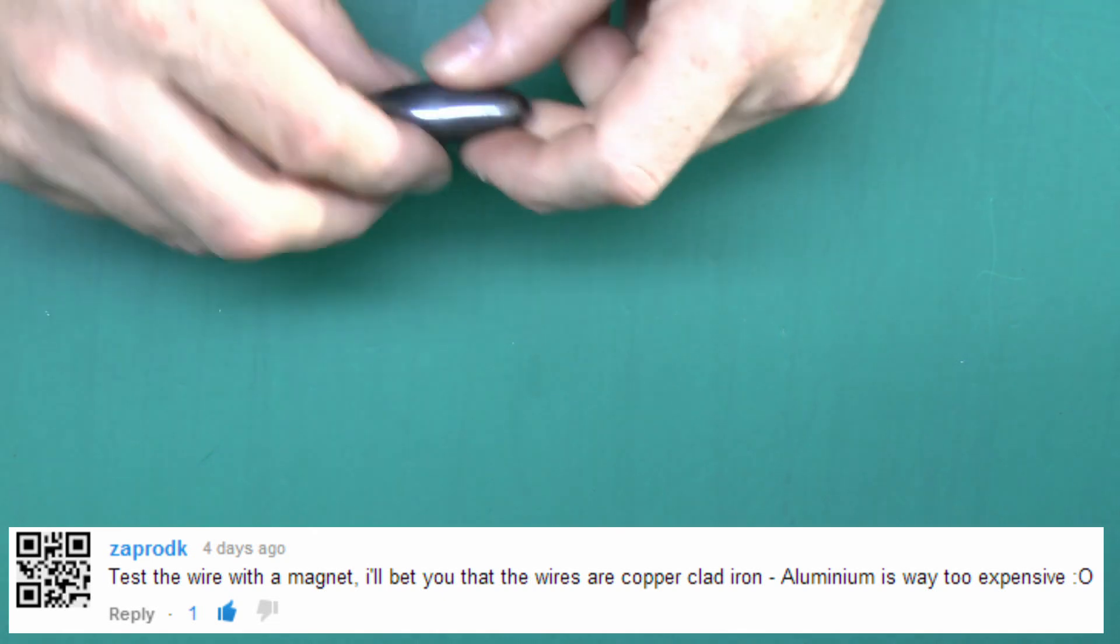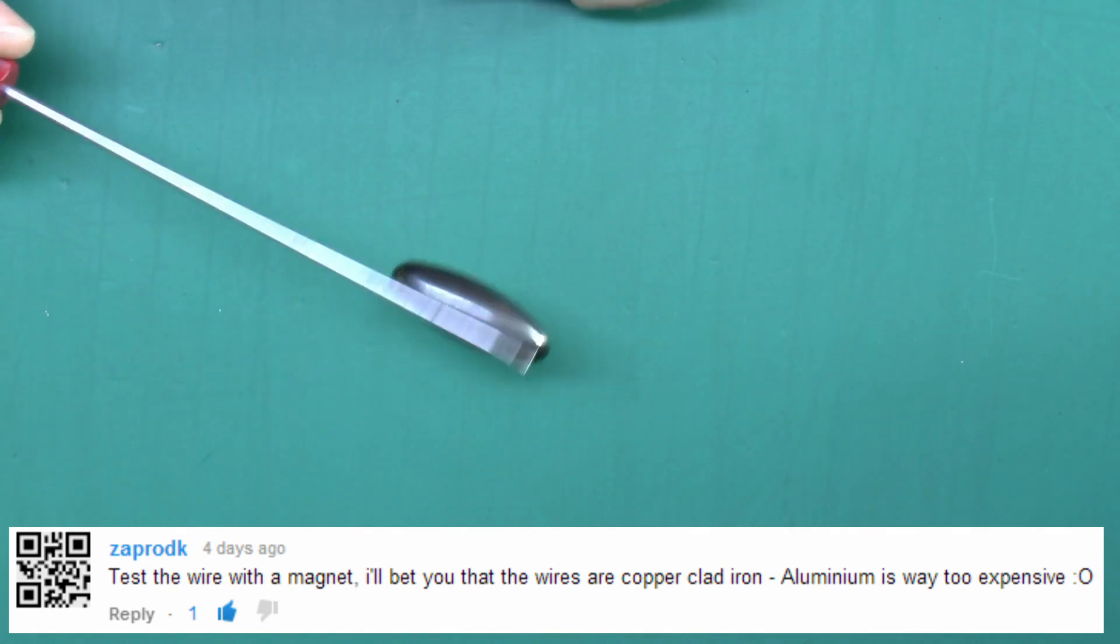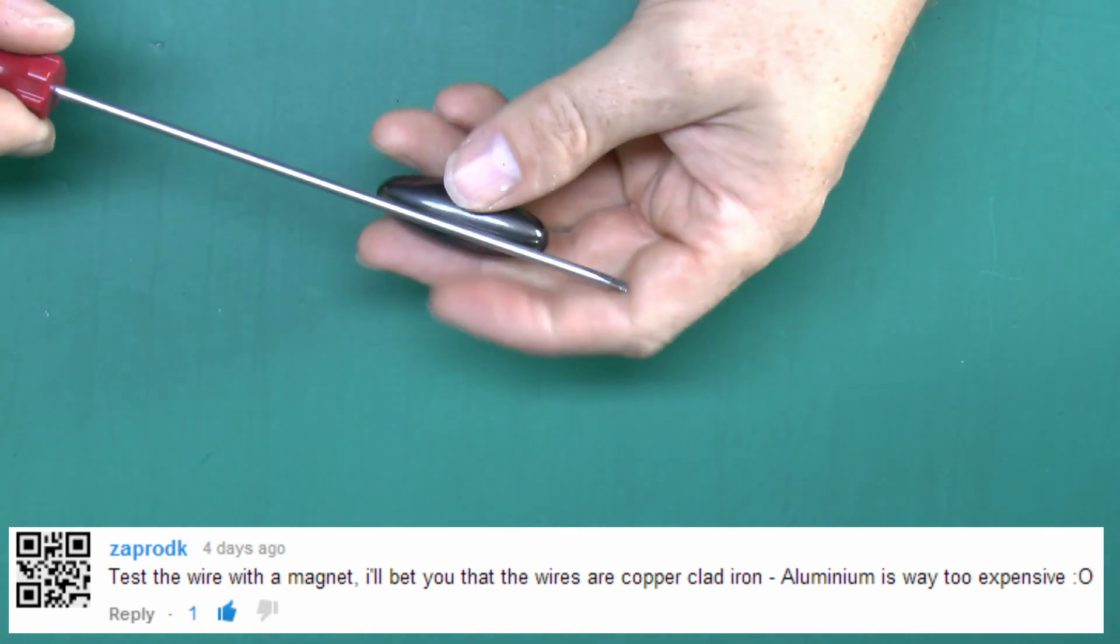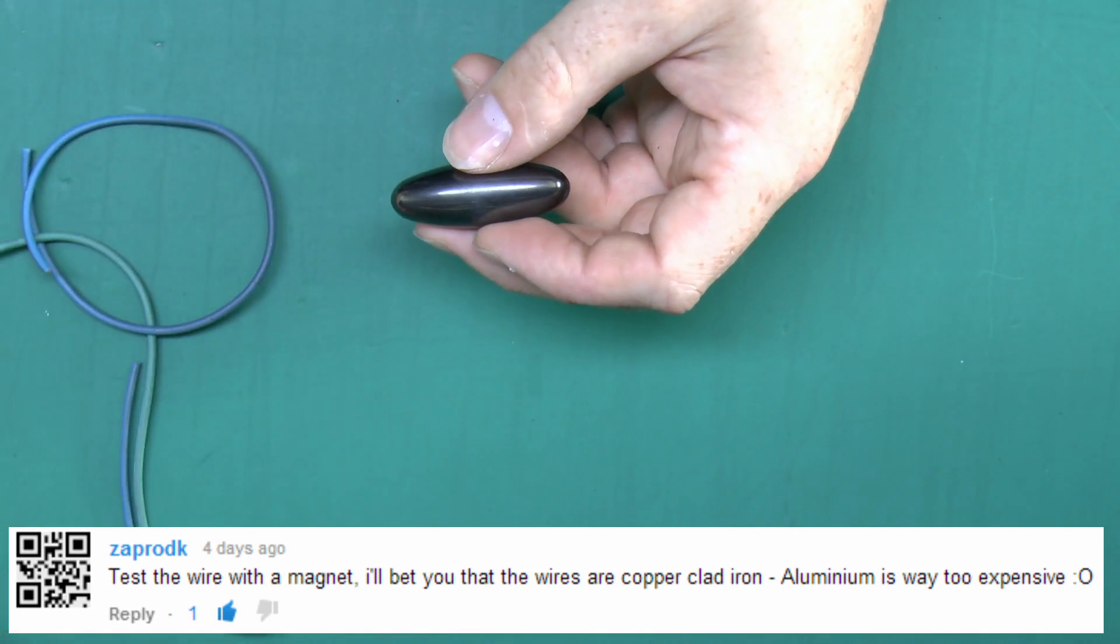Now Zapro DK suggested we should test the wires with a magnet. So here's a magnet. I can see it sticks to the steel screwdriver there no problem. So here's the wires, let's see if they are attracted to it or not.